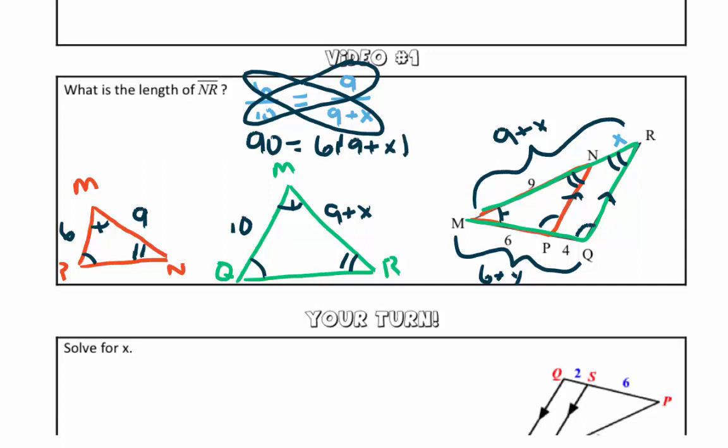So remember, when we're multiplying 6 times this expression, 9 plus X, we need to distribute the 6 into the parentheses. So what this becomes is 90 is equal to 54 plus 6X.